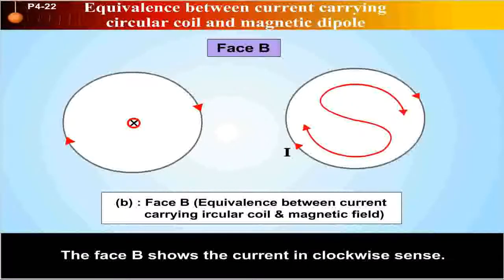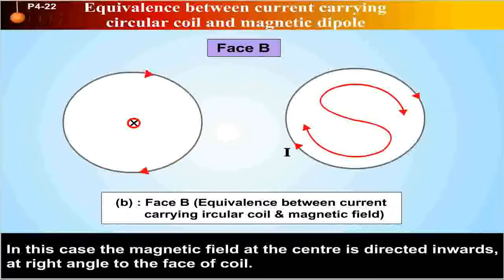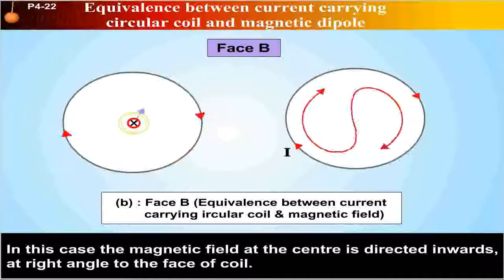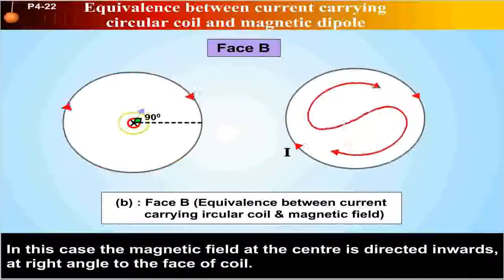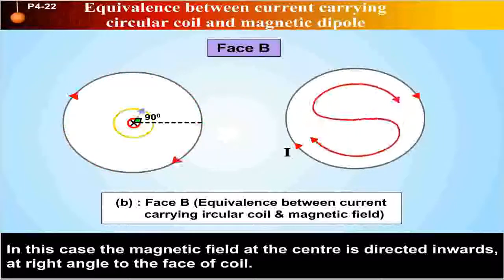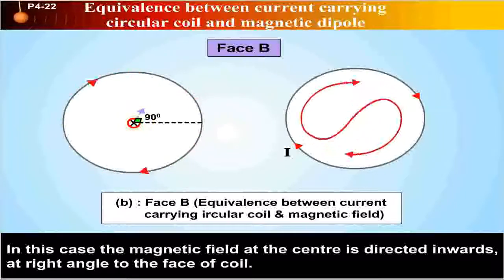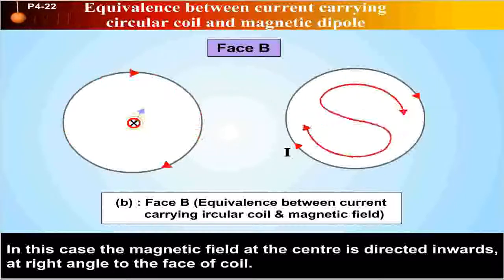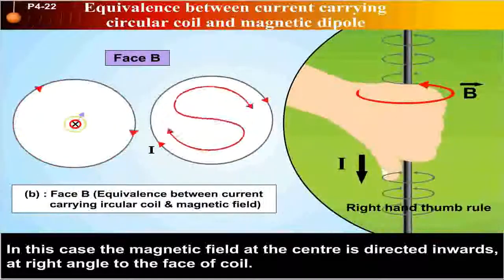The face B shows the current in clockwise sense. In this case, the magnetic field at the center is directed inwards at the right angle to the face of the coil, as shown in this figure. This is also as per the right-hand thumb rule.